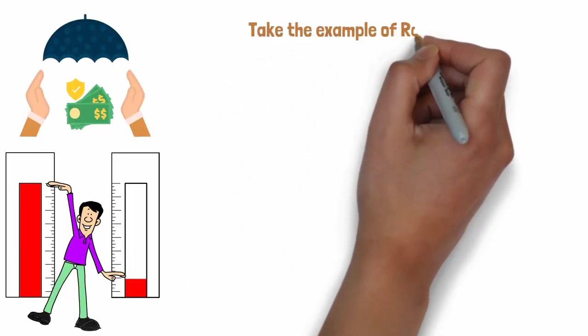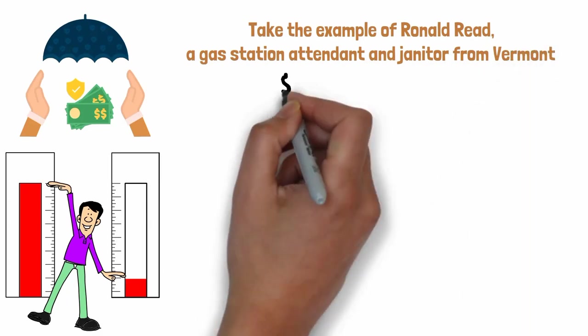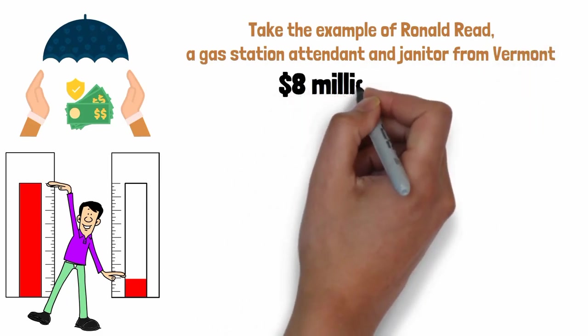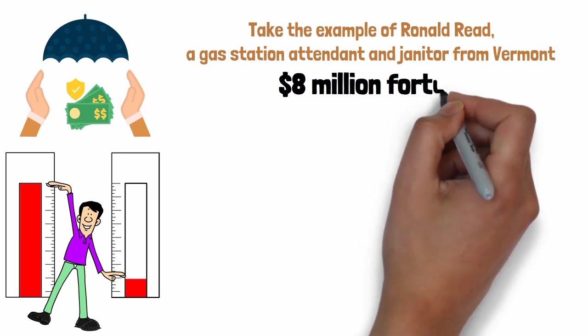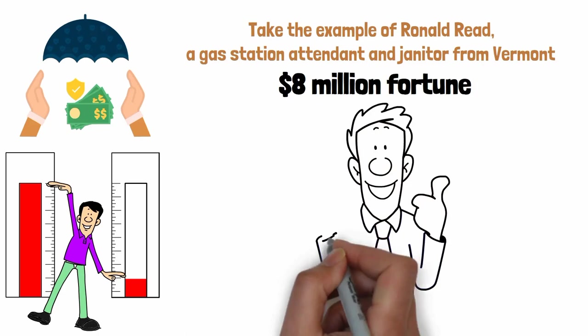Take the example of Ronald Reed, a gas station attendant and janitor from Vermont. Despite earning a modest income, he amassed an $8 million fortune by living frugally and investing wisely. His story is a testament to the power of living below your means.